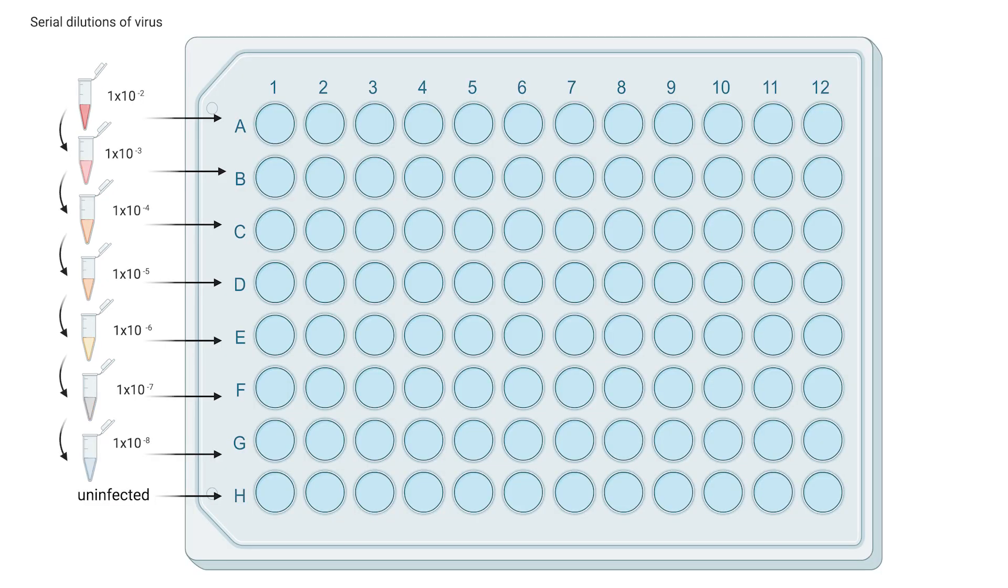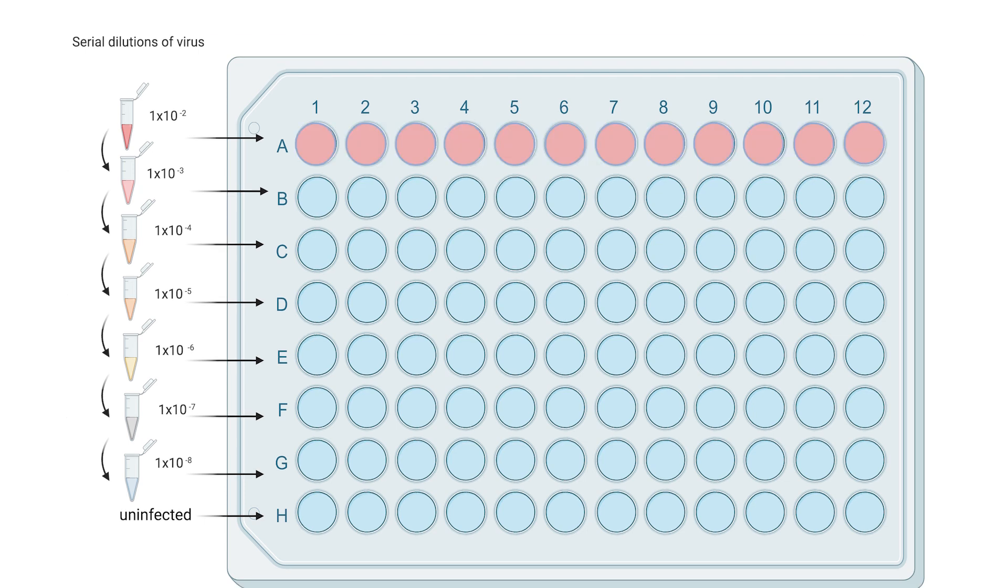In this 96-well plate, each well contains a monolayer of cells. We introduce separate dilutions of virus into each row. For instance, all the wells in row A contain the 10 to the minus 2 dilutions, and all the wells in row B contain the 10 to the minus 3 dilutions, and so forth.